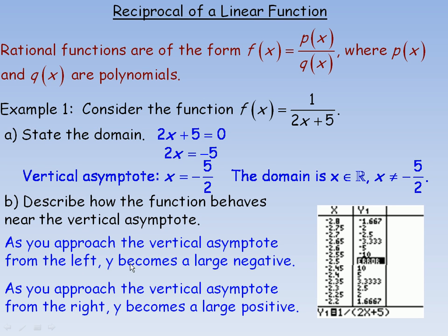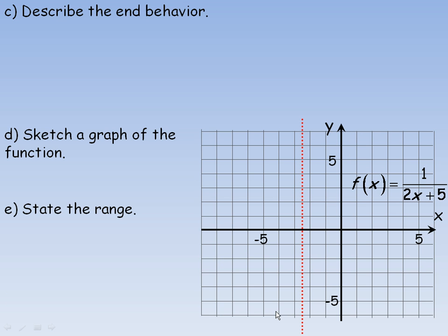Notice on the graph: as you approach from the left, y becomes a large negative, so the arrow goes way down. As you approach from the right, y becomes a very large positive. There's the vertical asymptote. The graph goes down very far approaching from the left, and as you approach from the right side, y becomes an extremely large positive number.